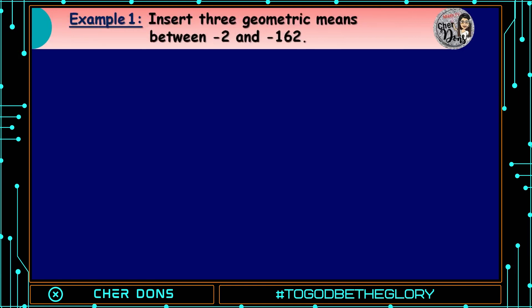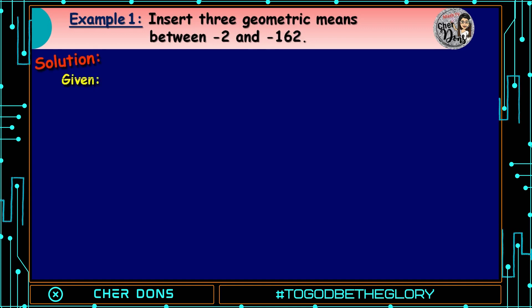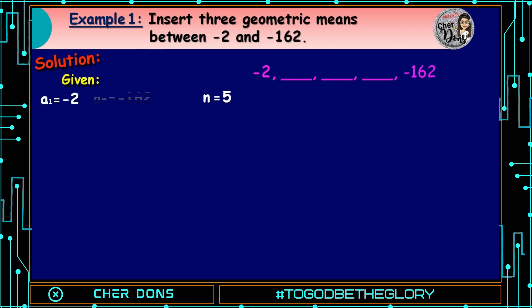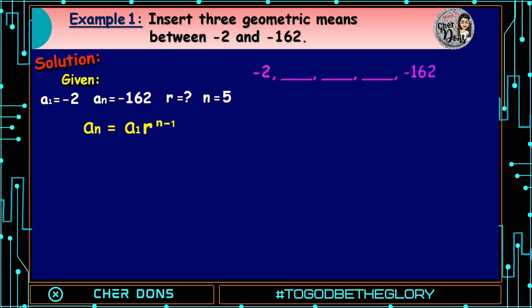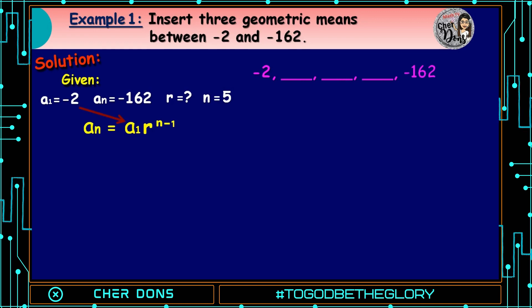Example number 1. There are five terms in the sequence, so our n is equal to 5. A sub 1 is negative 2, A sub n is negative 162, and we're looking for r. Applying the formula, A sub n is equal to A sub 1 multiplied by r raised to n minus 1, where negative 2 goes to A sub 1, negative 162 goes to A sub n, and 5 goes to n.